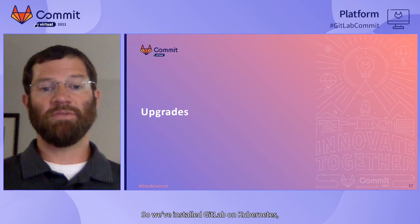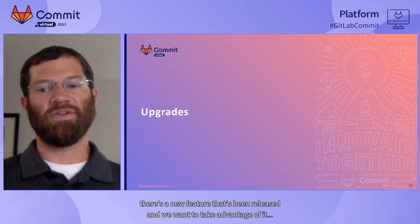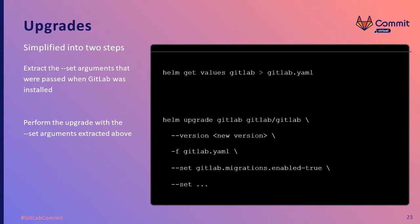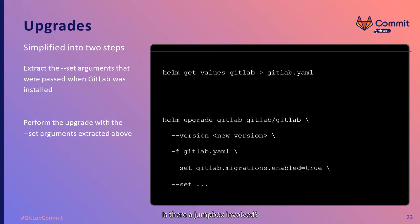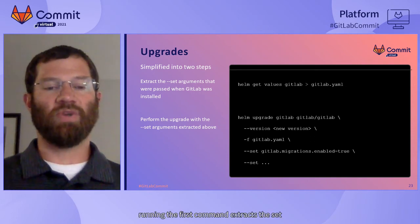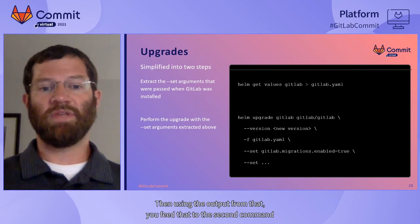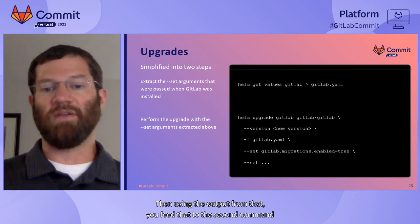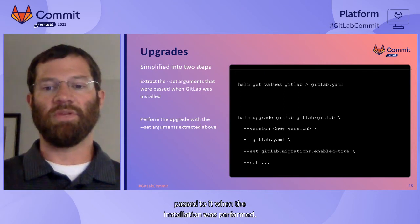So we've installed GitLab on Kubernetes, we've migrated our data, and folks are using it. There's a new feature that's been released and we want to take advantage of it, so we need to upgrade. With the Helm-based deployment, we can upgrade in two steps. The first command extracts the set arguments that were passed when GitLab was installed. Then, using the output from that, you feed it to the second command, and Helm will upgrade GitLab using those arguments that were passed during the initial installation.